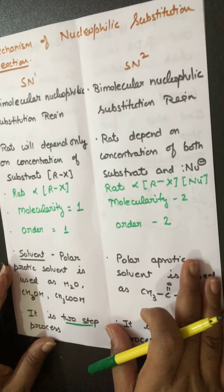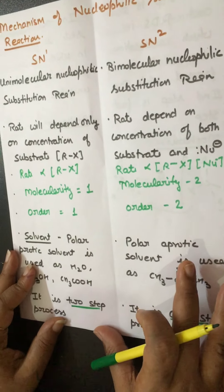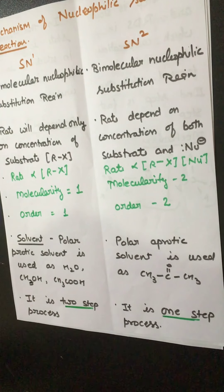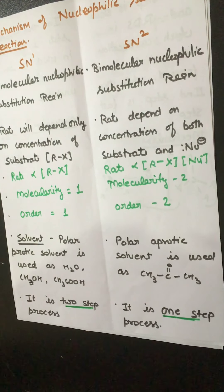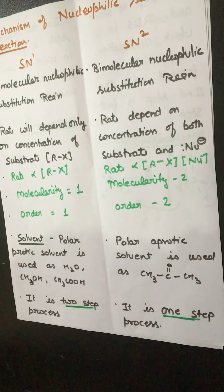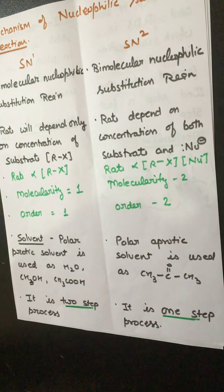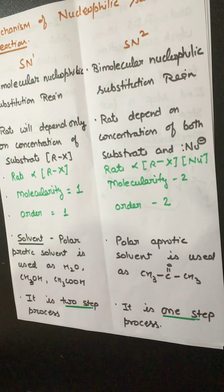Now let's talk about solvent. In case of SN1 type of mechanism, a polar protic solvent is used, because it stabilizes the intermediate. So the solvent used in SN1 type of mechanism is polar protic solvent, while in SN2 type the solvent used is polar aprotic solvent, for example acetone.